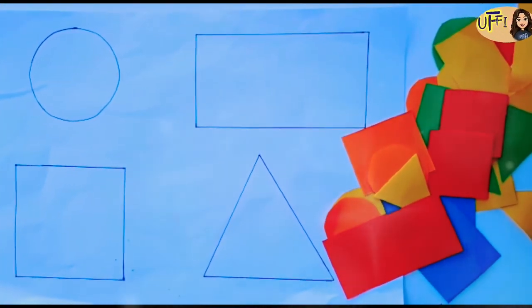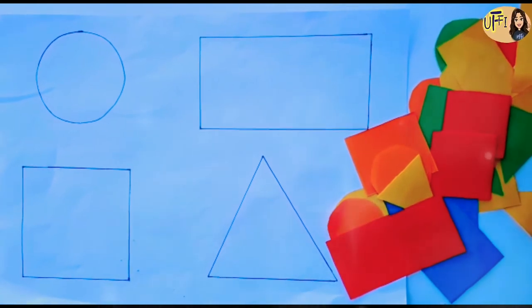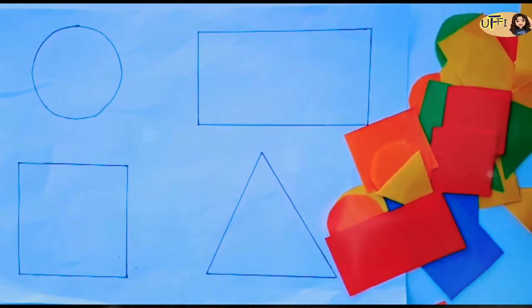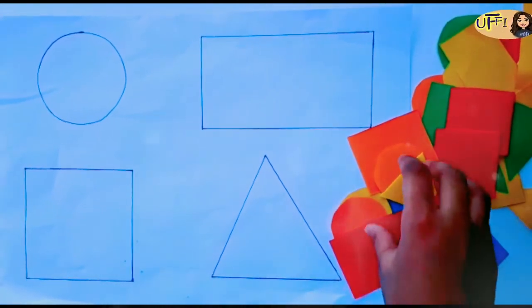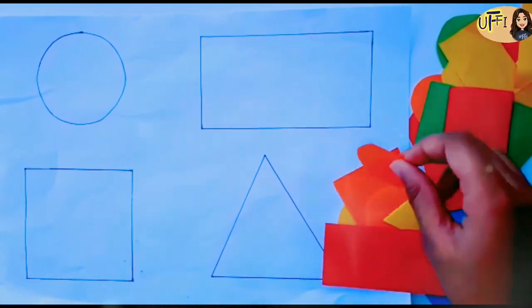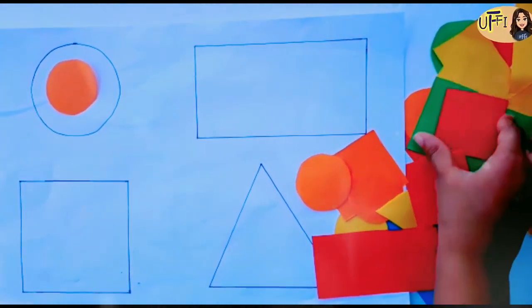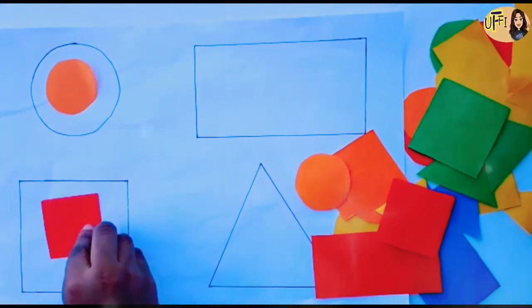Now, you have to put all the shapes to the correct shapes. Okay, can you do it for me? Yes. Start. Circle. Very good. Circle shape. Very good. Square shape. Square shape.